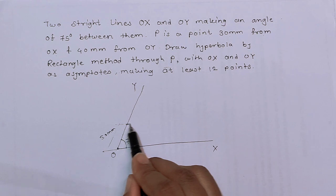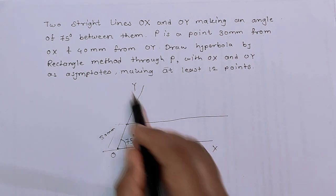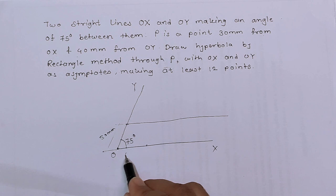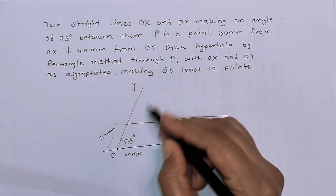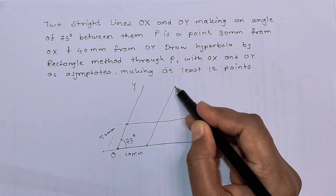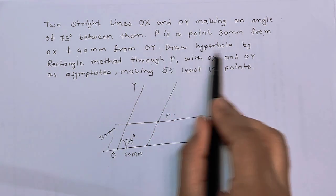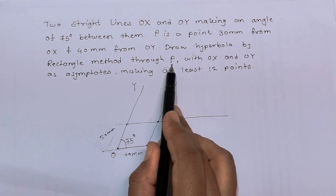And we have to draw the hyperbola passing through point P. The location of P is given - it is at 30 mm from OX and 40 mm from OY. So here 40 mm from OY, so intersection of these two we get point P.